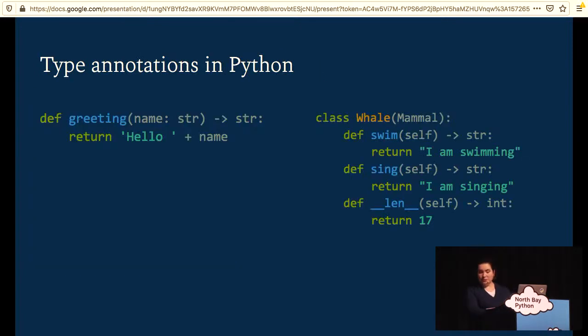So this is what type checking and or type annotations in Python look like. And once again, this is in Python 3.7. So here I have an example of an annotated function and an annotated class. And it shows the types that the function takes in and the types that it returns and the types that the methods on the class return.